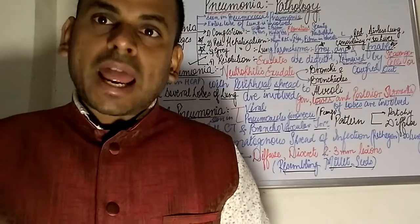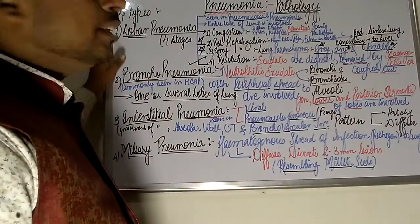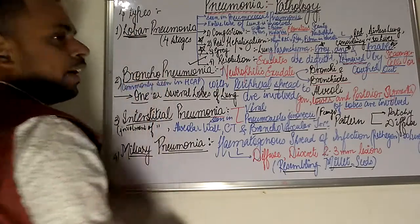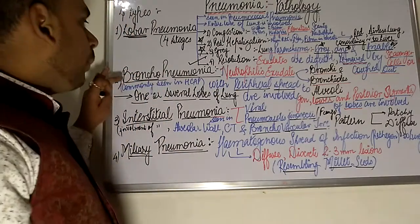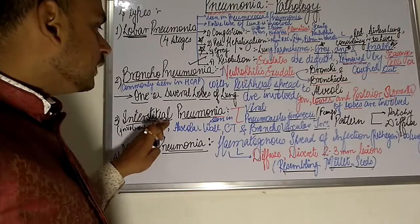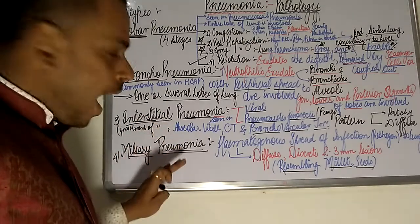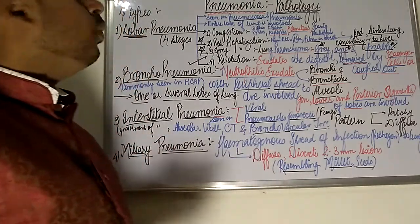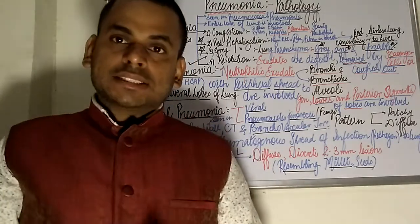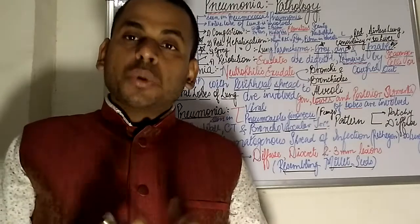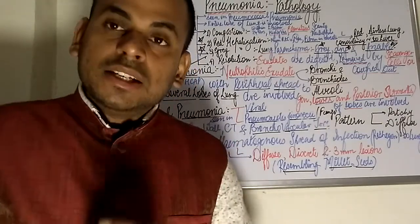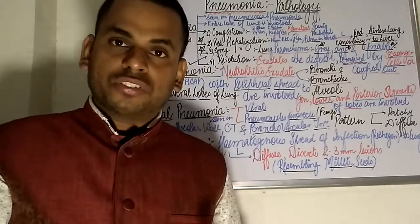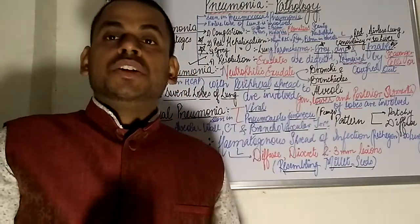The four types of pneumonia are: first, lobar pneumonia; second, bronchopneumonia; third, interstitial pneumonia; and fourth, miliary pneumonia. Lobar pneumonia, as the name suggests, affects just a single lobe of the lung.